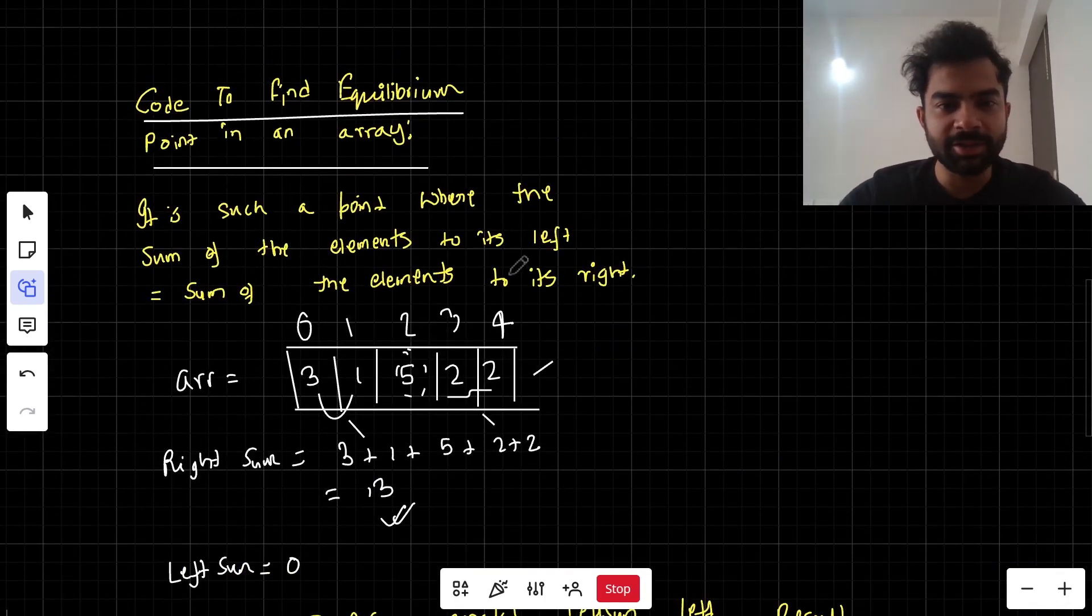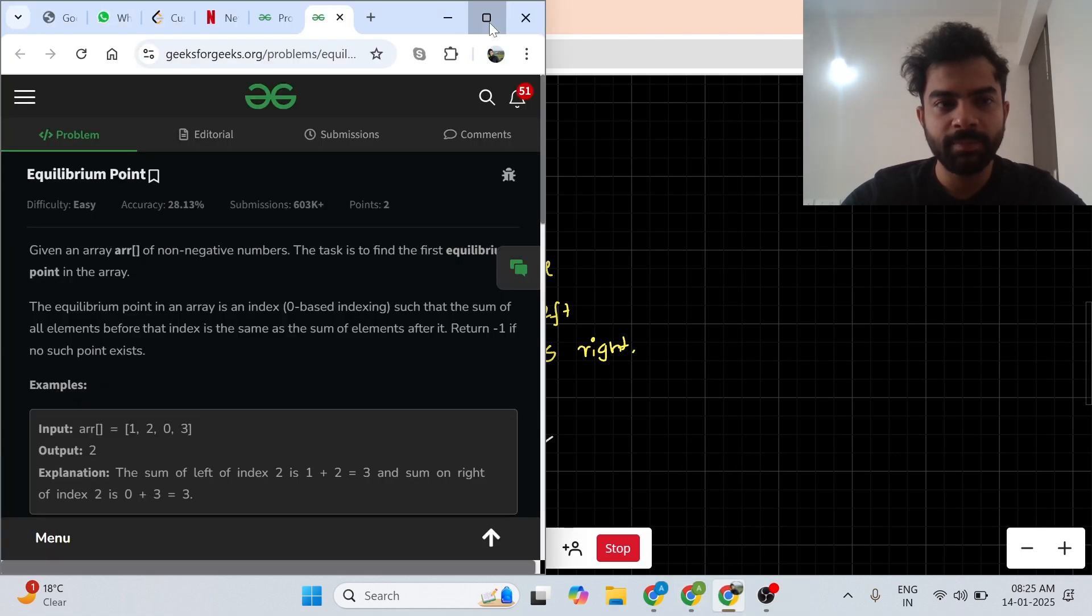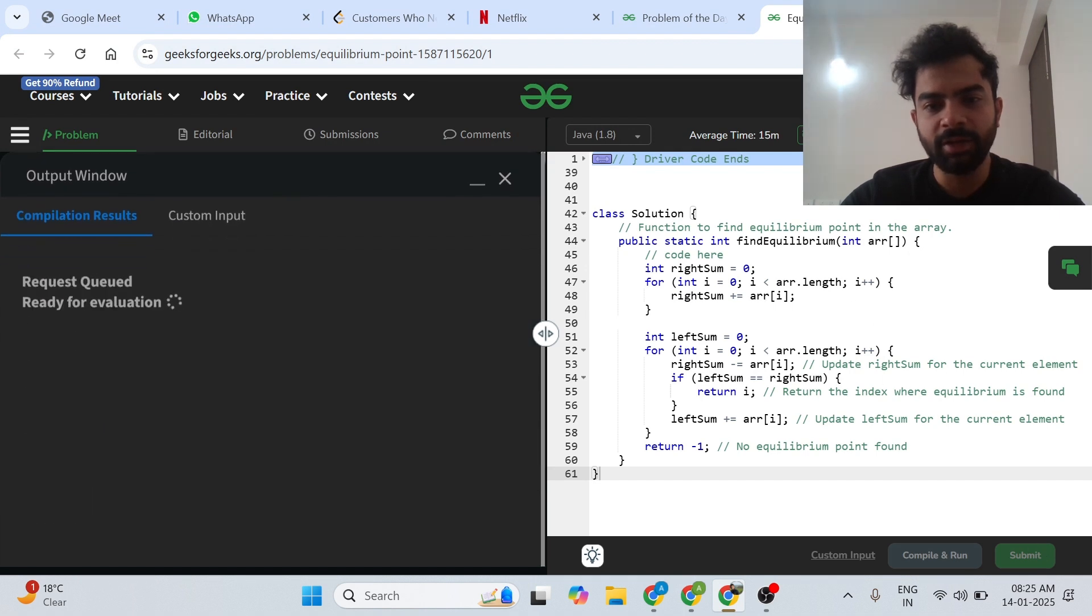As you can see, I've done the right sum, then I've taken the loop to calculate the sum to the right and similarly for the left sum as well.